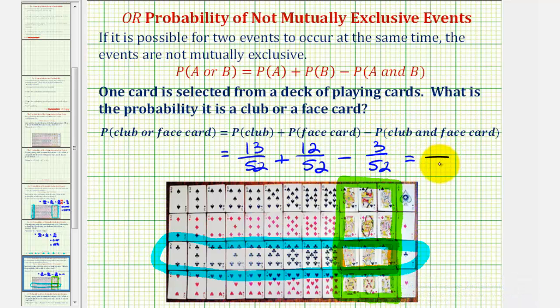So we have a common denominator of 52. The numerator is going to be 13 plus 12, that's 25, minus 3, that's 22. Now if we stop here for a moment, notice how this is telling us there are 22 favorable ways to pick a card that is a club or a face card out of 52.